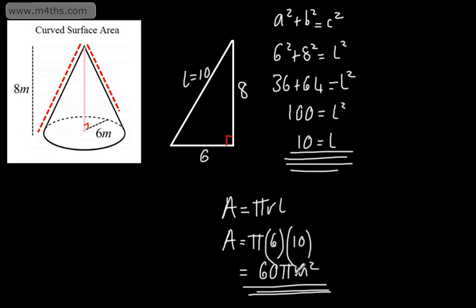On the calculator, type that in, hit SD, and that will give you the value as a decimal. I always prefer to leave it in exact form in terms of pi — I just think it looks neater, and it's easier to work with when you don't have a calculator.